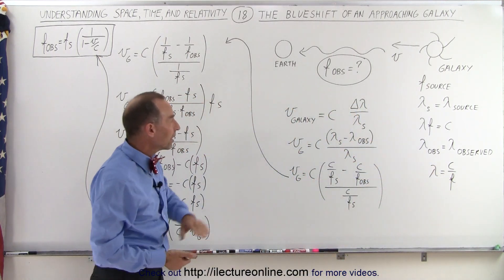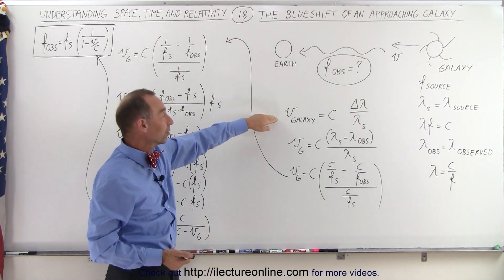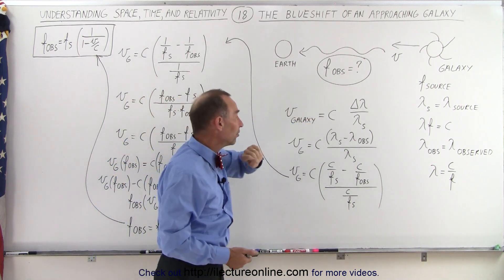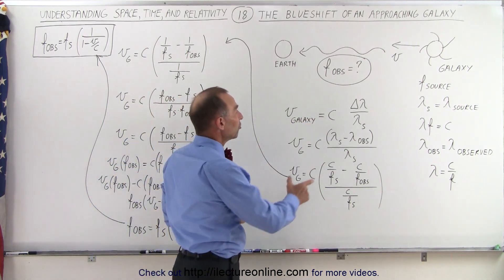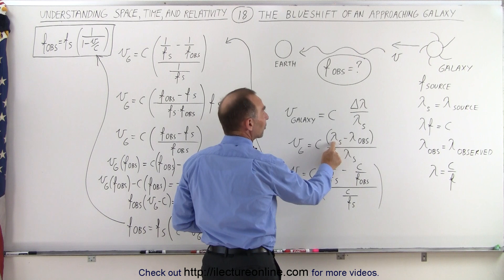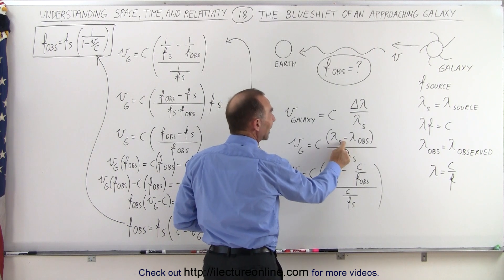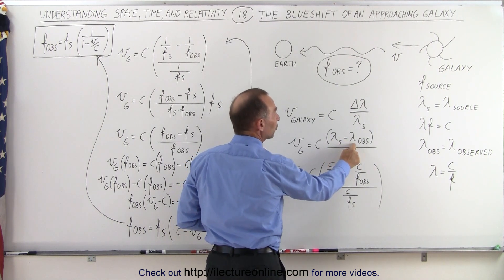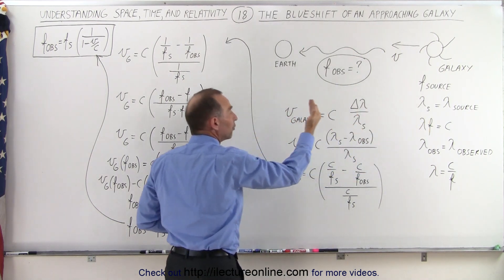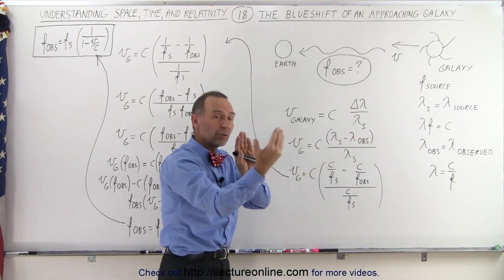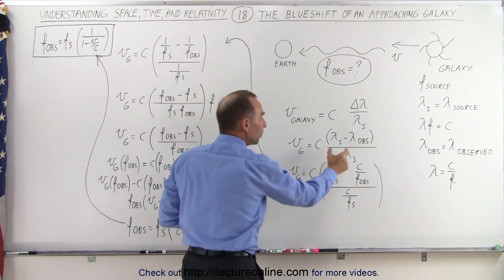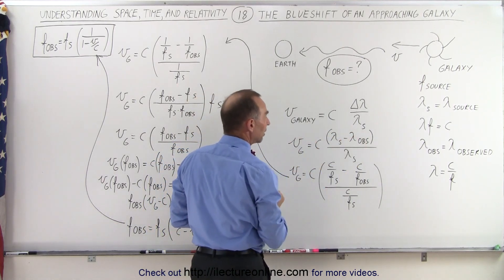So here, if we use this equation — the velocity of the galaxy being equal to this — the change in the wavelength is going to be the wavelength from the source minus the wavelength observed. If the object is moving towards us, the wavelength of the observed light will shrink, so this will be a positive quantity.